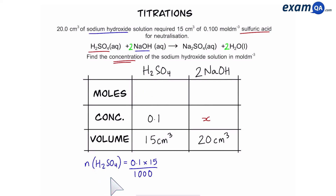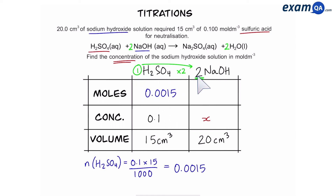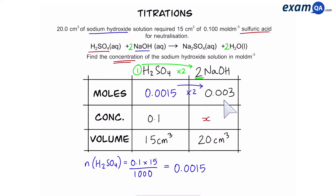To work out moles, we're going to do concentration times volume over 1000. That gives us 0.0015. Now, you can see that the ratio of sulfuric acid to sodium hydroxide is a 1 to 2 ratio, meaning that we have to double our moles. So the moles of sodium hydroxide will be 0.003.